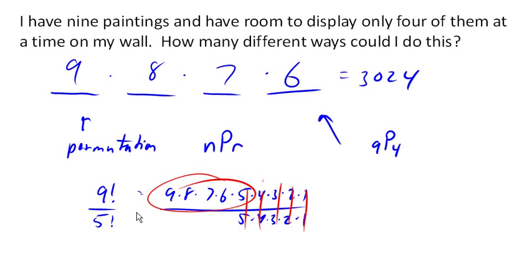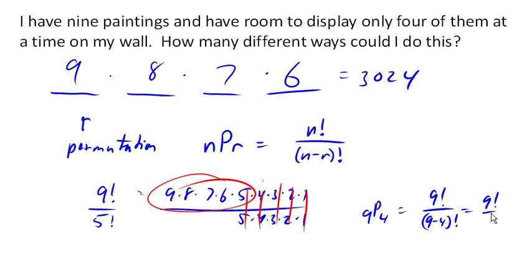So if we have NPR, it turns out we can compute that using factorials as N factorial over N minus R factorial. So in this case, when we had 9P4, that would be 9 factorial over 9 minus 4 factorial, or in other words, 9 factorial over 5 factorial, as we just saw here.